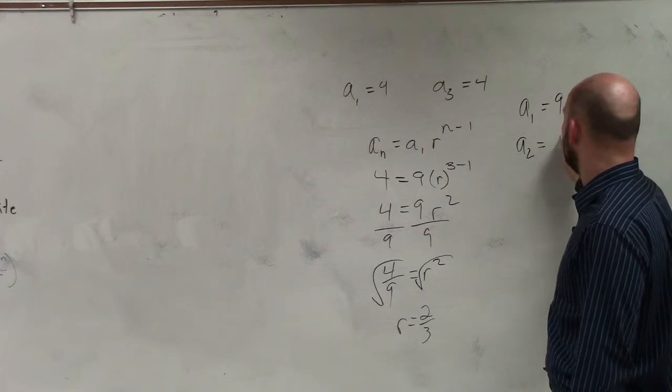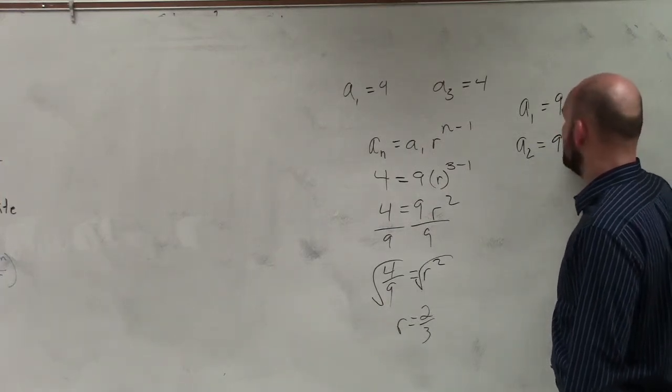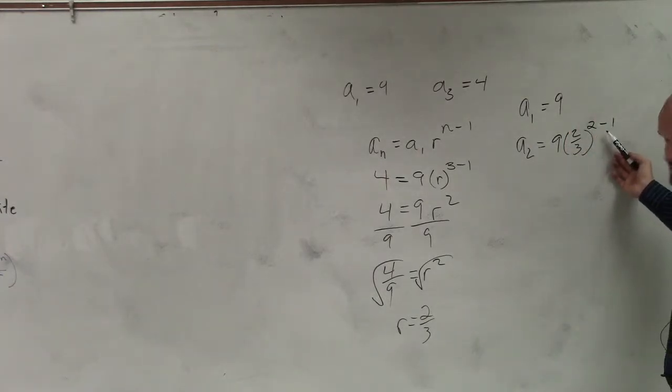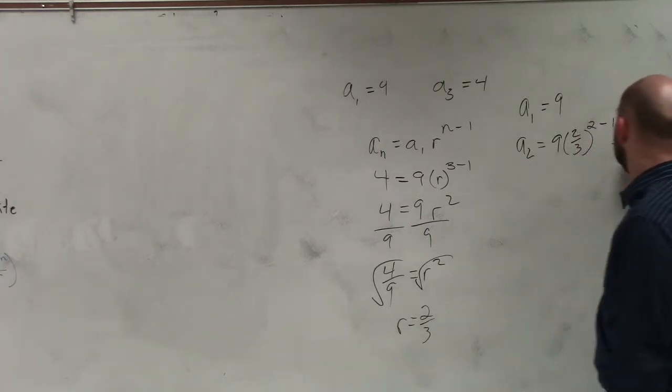It's going to be a sub 1, which is 9, times r, which is 2 thirds, raised to 2 minus 1. Well, 2 minus 1 is 1. So therefore, it's 2 thirds times 9, which is 18 over 3, which is 6.